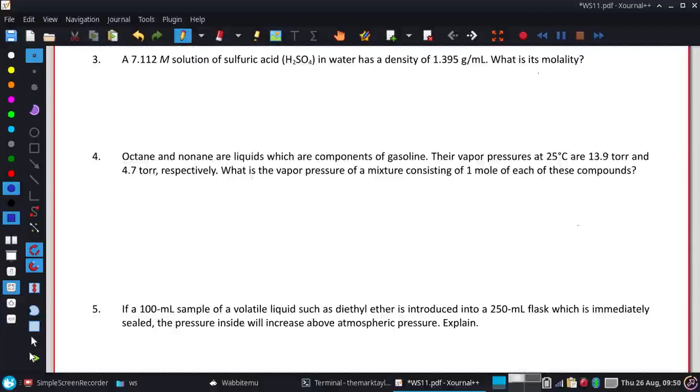Okay, number three here. A 7.112 molar solution of sulfuric acid, H2SO4, in water has a density of 1.395 grams per milliliter, and we want to calculate its molality.